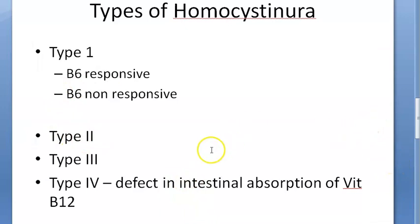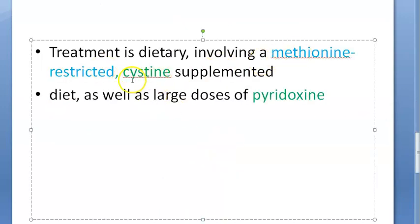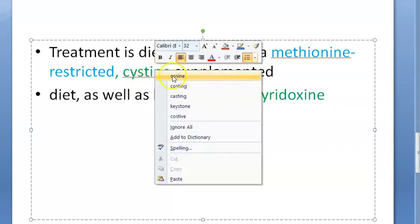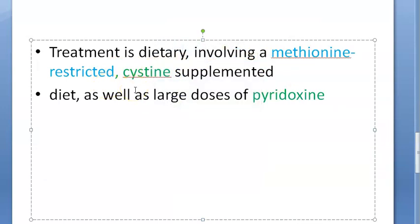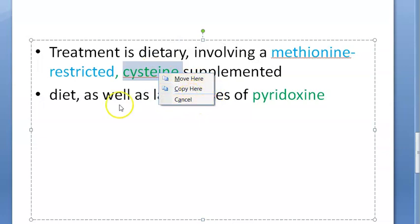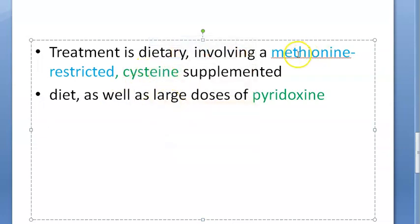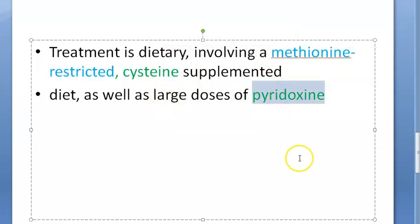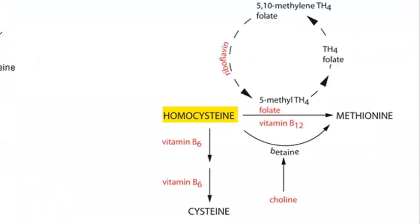For treatment, you should give cysteine — spelled C-Y-S-T-E-I-N-E — because cysteine is deficient. You should not give methionine because methionine is already elevated, and homocysteine is also elevated. So give cysteine, and if it is vitamin B6-dependent, also give pyridoxine.